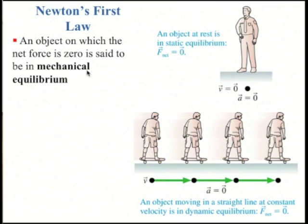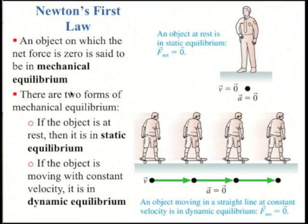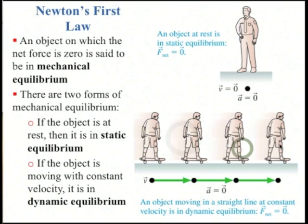An object on which the net force is zero is said to be in mechanical equilibrium. There are two types: a person who is at rest has zero net force — this is static equilibrium. A skateboarder sliding along with zero net force has constant velocity and zero acceleration — this is called dynamic equilibrium.